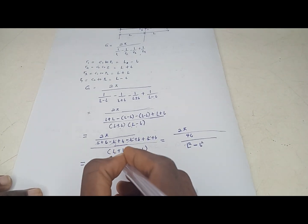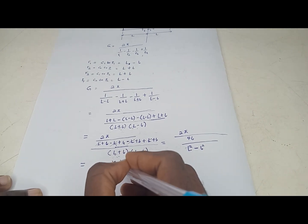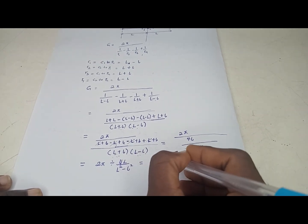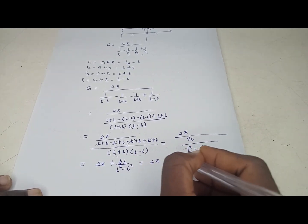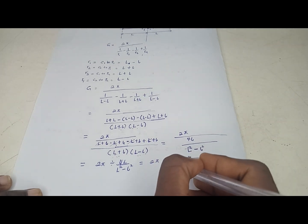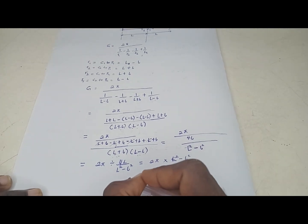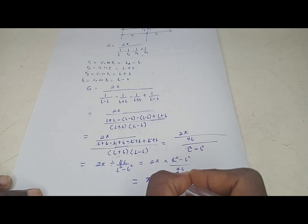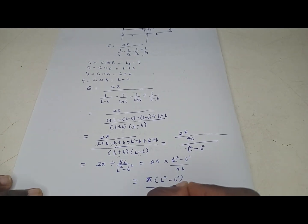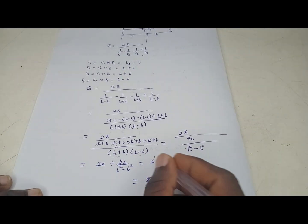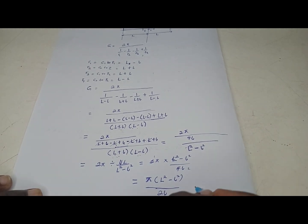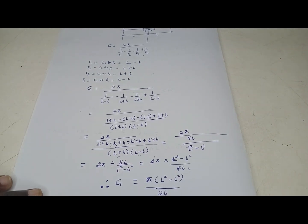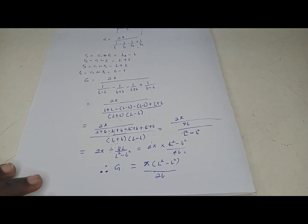So we now have G = 2π divided by (4l / (L² - l²)), which equals 2π times (L² - l²) over 4l. Simplifying, this gives G = π(L² - l²) over 2l. This is your geometric factor for the Schlumberger array.